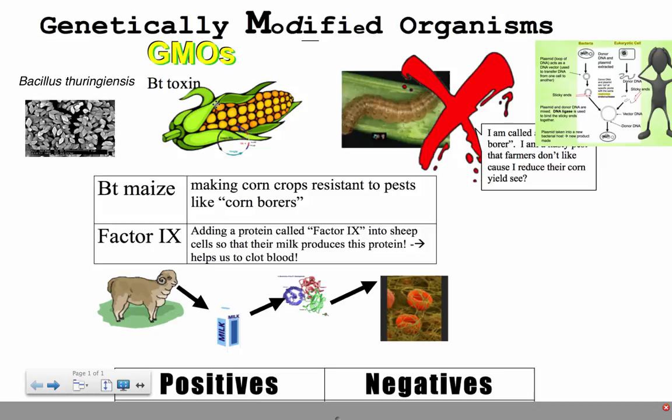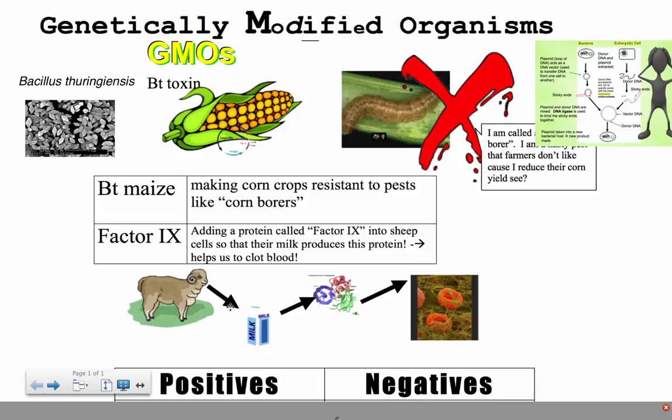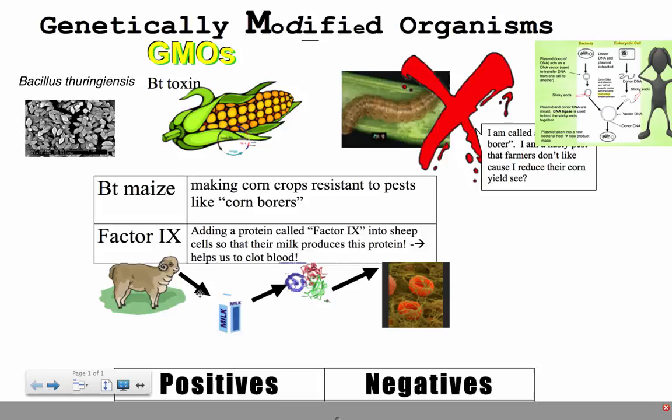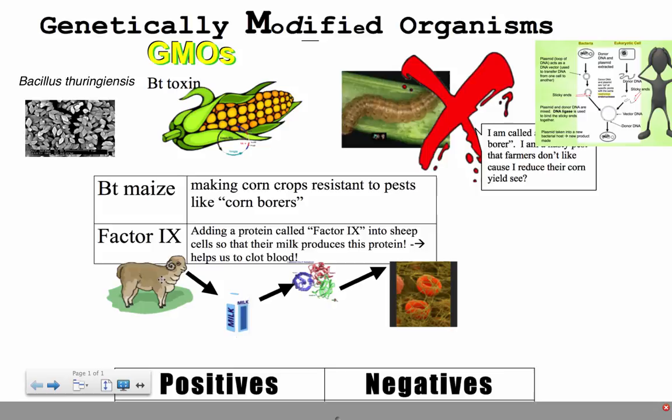Another example is Factor IX — Factor Roman Numeral IX. Factor IX is a protein important in blood clotting. People who are hemophilic — there are different types of hemophilia, but one is due to the absence of Factor IX — have a mutation that doesn't allow them to produce Factor IX properly. We can manufacture it outside their body using genetically modified sheep and their milk specifically. These sheep are genetically modified, probably at the embryo level, so their milk produces an additional protein: Factor IX.